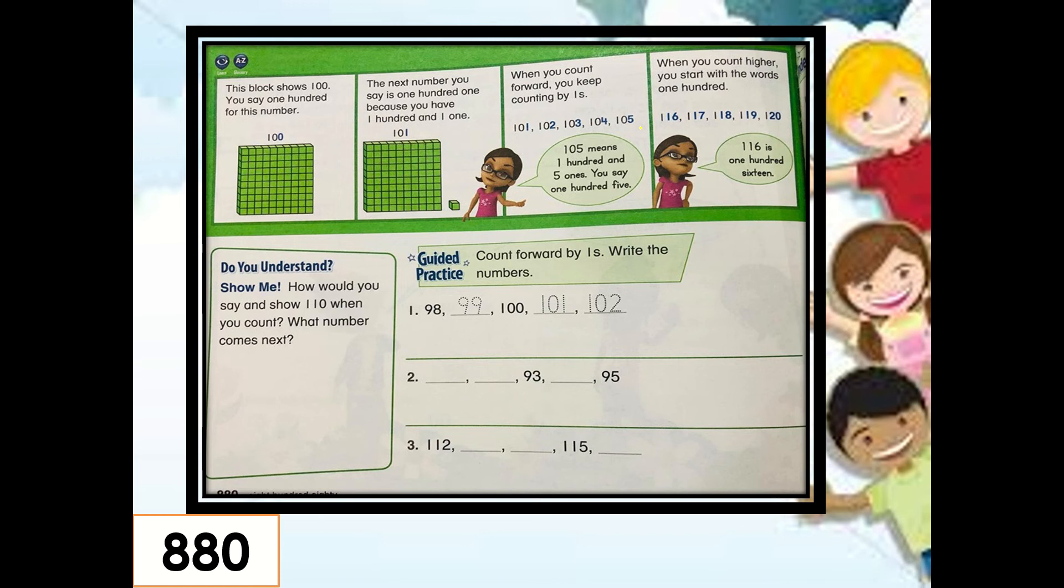Now, let's continue page 880. We will count forward by 1 and then write the numbers. For number 1, 98, then 99, 100, 101, and 102. How about in number 2, look at the missing numbers. 2 missing numbers before 93. So, you can count back, or you may also count on and start answering this number. So, let us answer number 2. So, we have here 91, 92, 93, 94, then 95. This is simply as simple as counting, KGs.